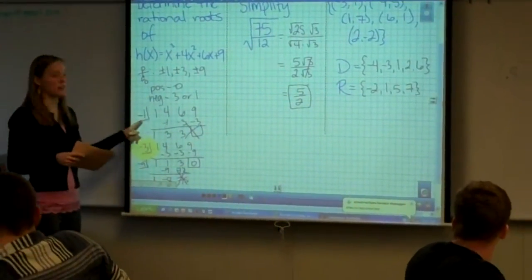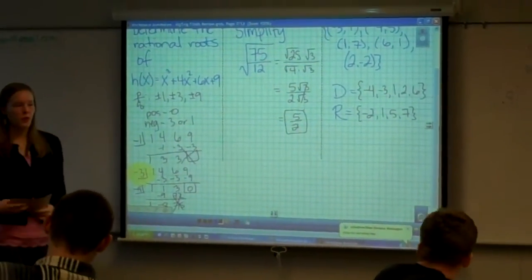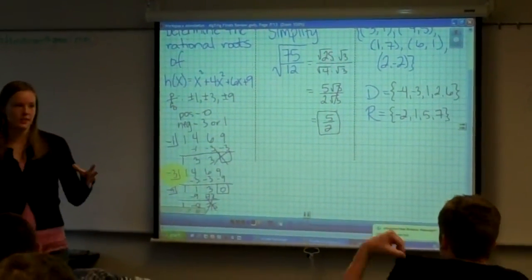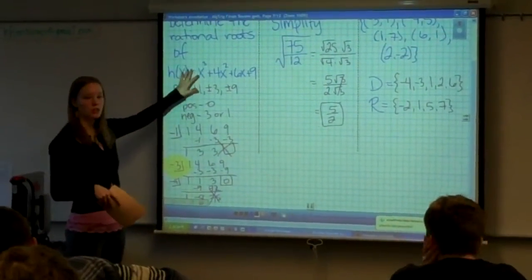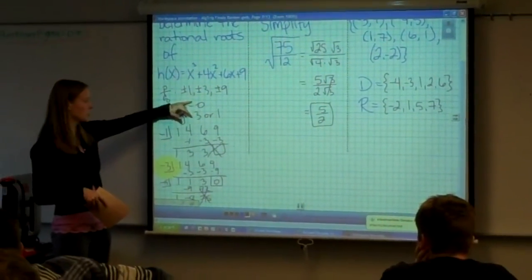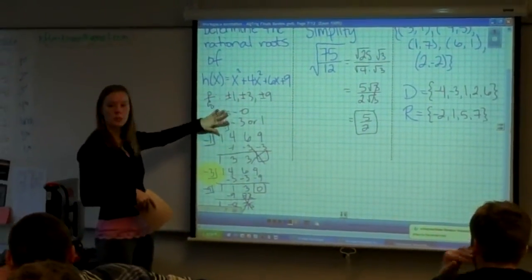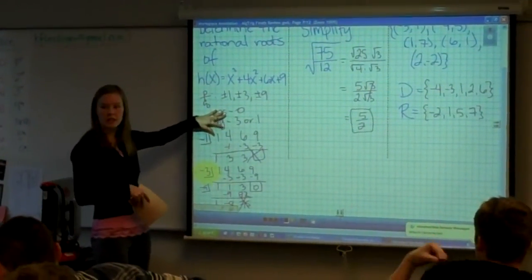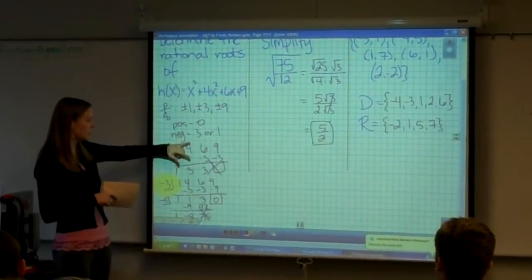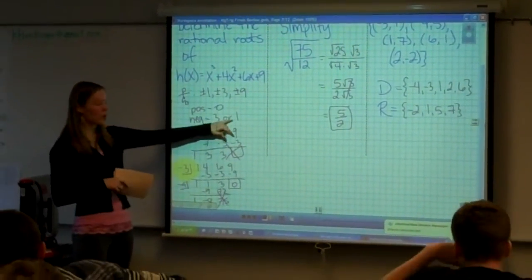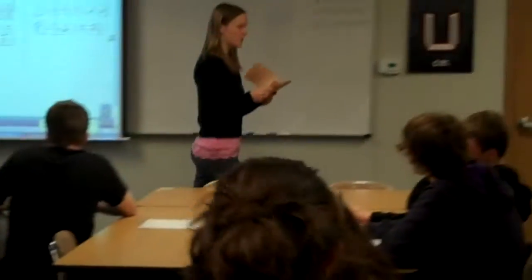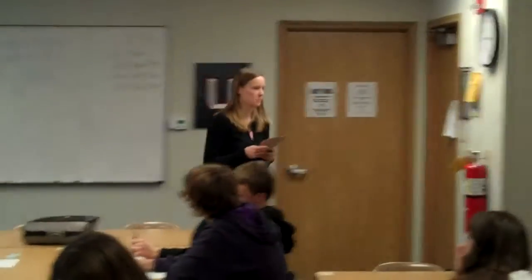Number one is from chapter four — the whole process. Doing your P over Q, listing the possible rational factors, doing your positives and negatives, looking at the sign changes. And then since there are three or one negatives, we just tried the negative value. Let's figure out these points.